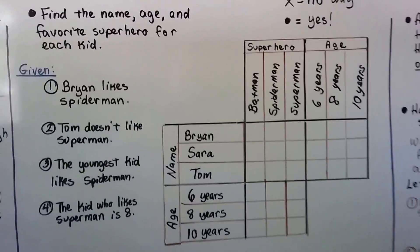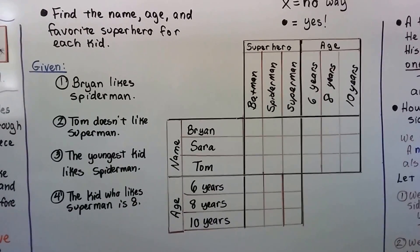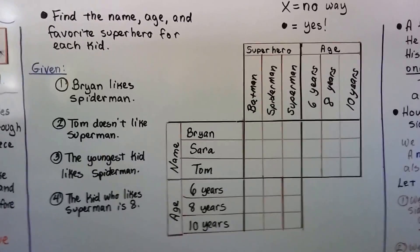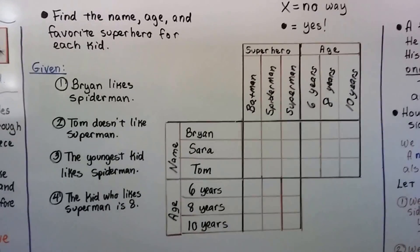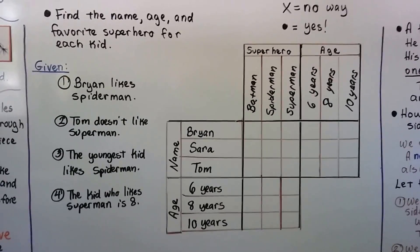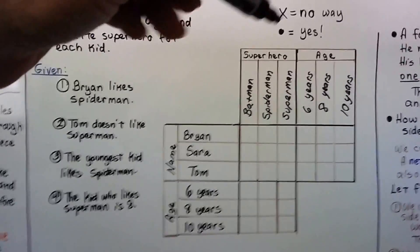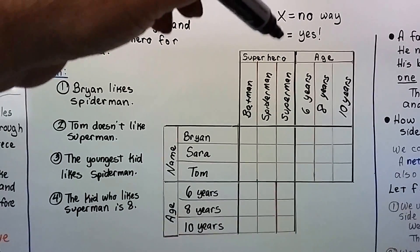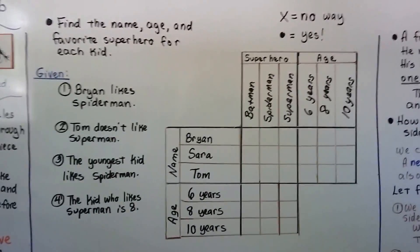I've got a grid here and I've got some clues. The puzzle says find the name, age, and favorite superhero for each kid. We're going to put an X in a box for no way and a dot for yes, definitely.